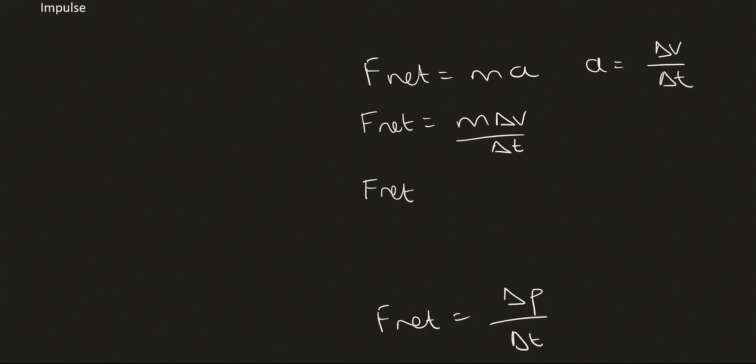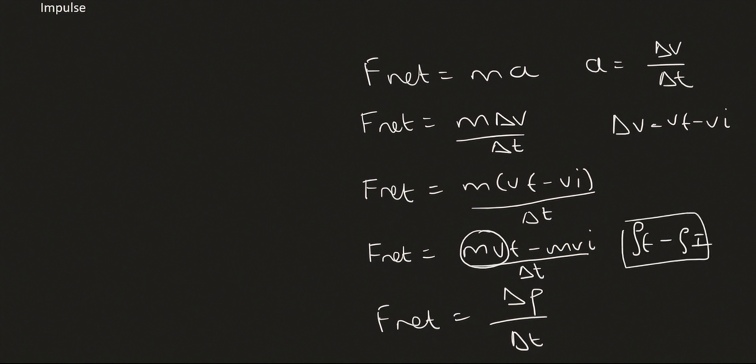So we can replace A with change in velocity over change in time. We know that change in velocity is equal to VF minus V initial. So I can change that to VF minus V initial over change in time. We can then multiply the M in and that's going to give you MVF minus MV initial over change in time. Then what we know here is that MV is equal to momentum, and so that's momentum final minus momentum initial. So a short way of writing that is just to use a triangle P. And so that's how we got to this formula over here.